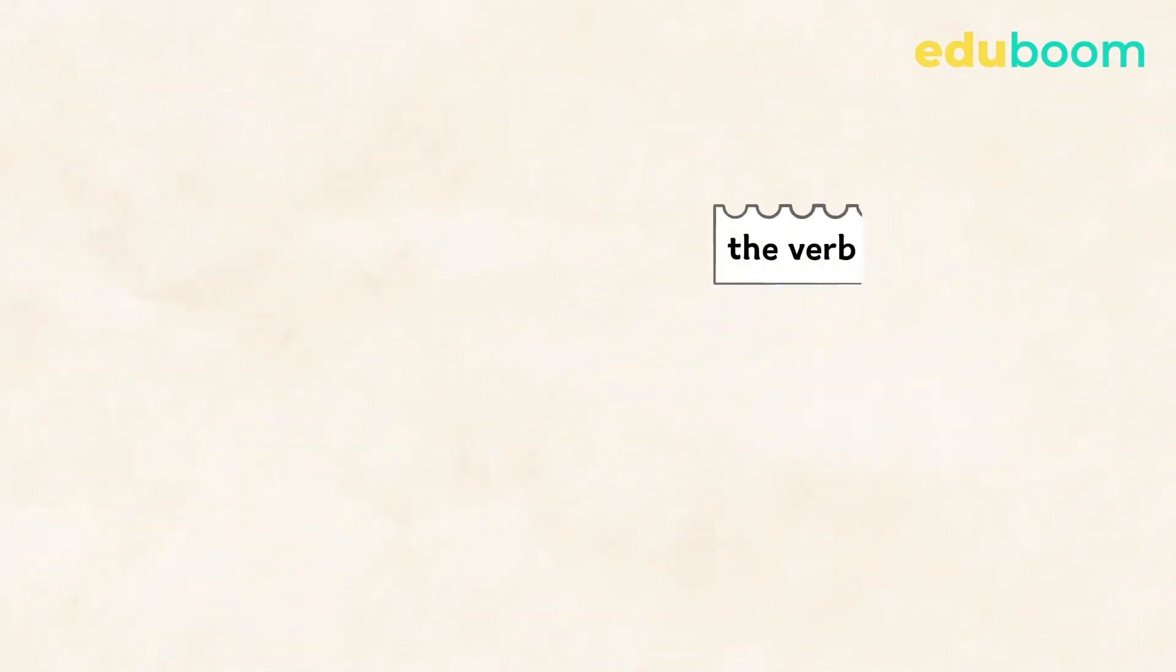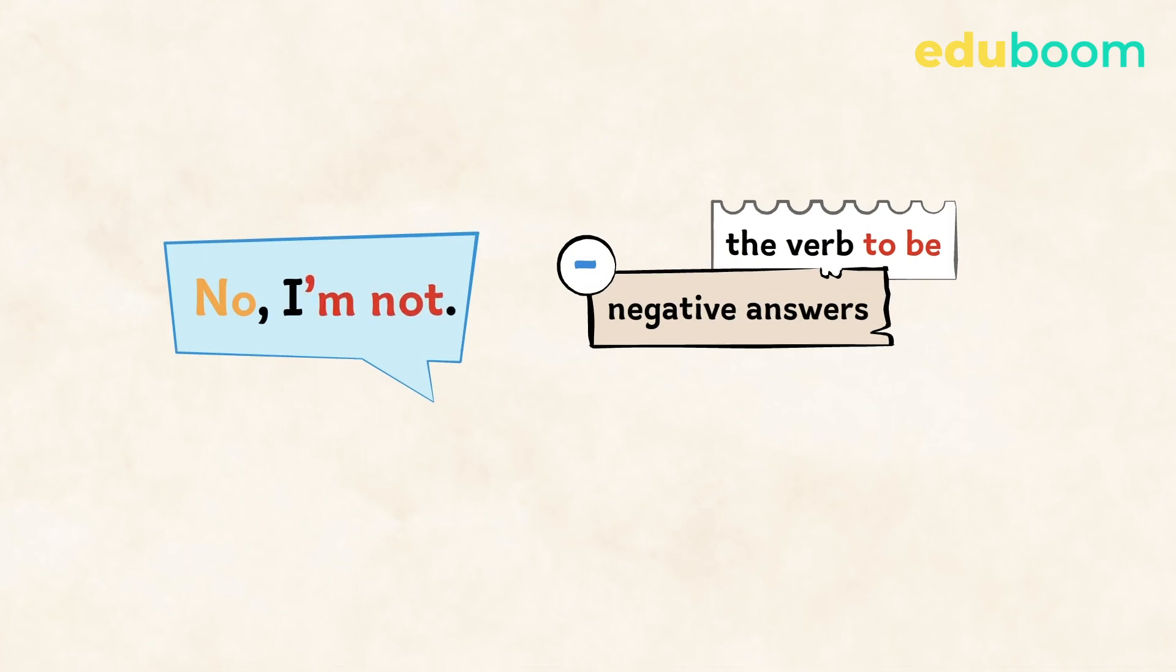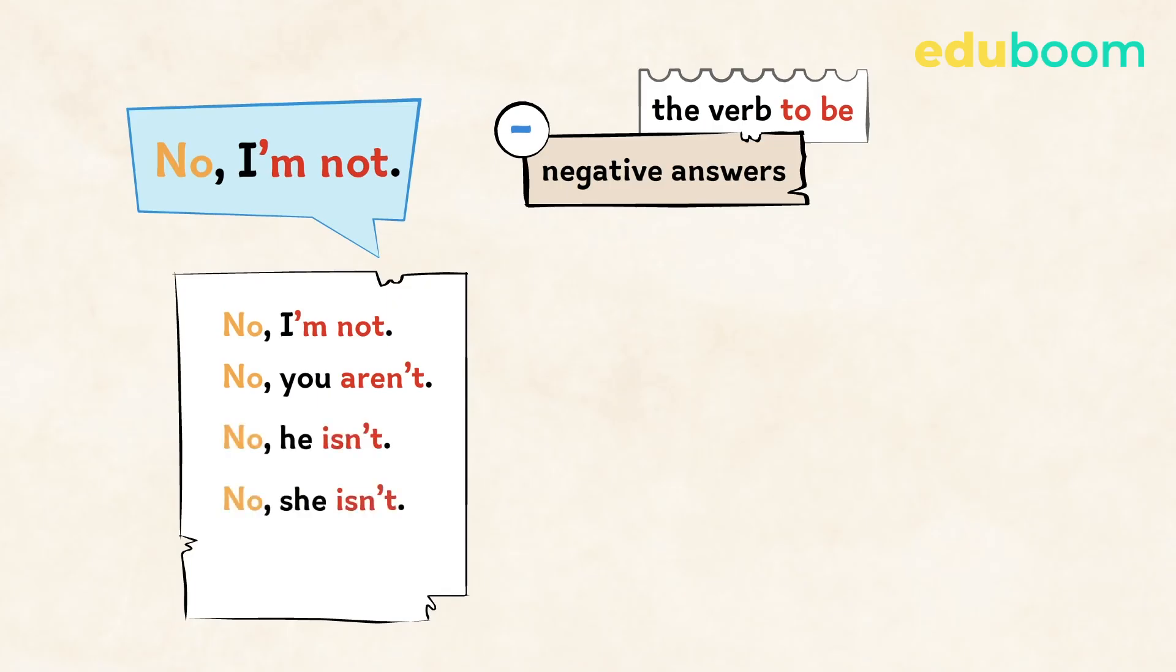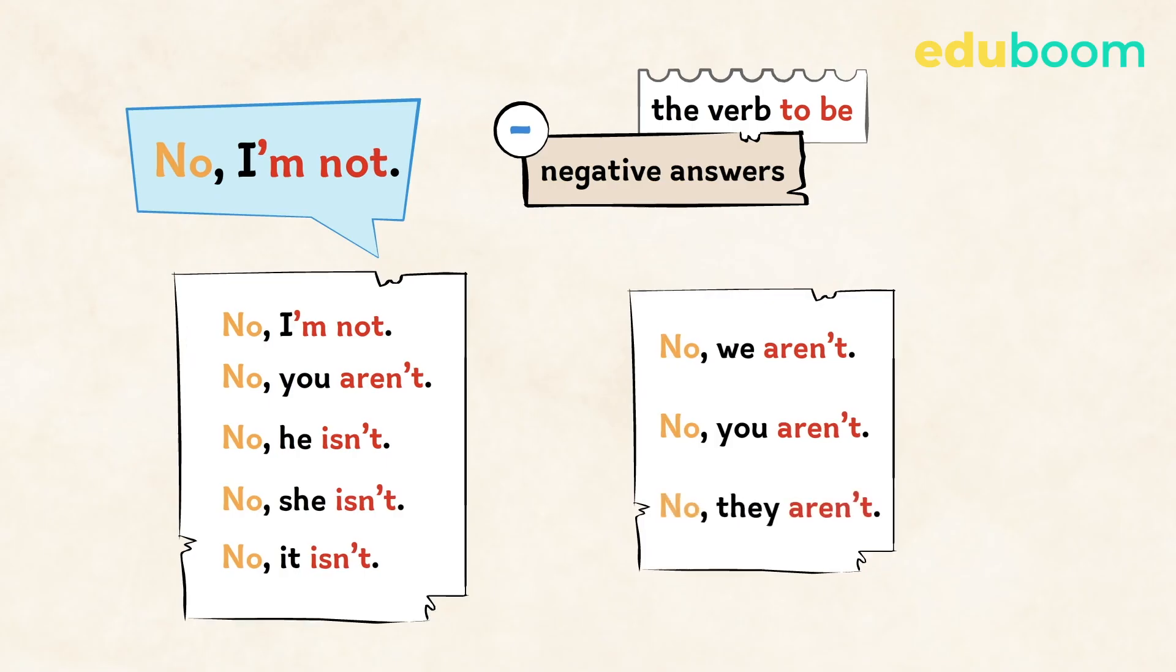Now look at the negative answer. You start with no, then you add a comma, then the personal pronoun, the form of the verb to be and not. Or you can use the short forms here too. No, I'm not. No, you aren't. No, he isn't. No, she isn't. No, it isn't. No, we aren't. No, you aren't. No, they aren't.